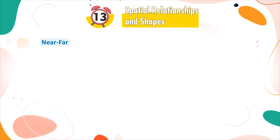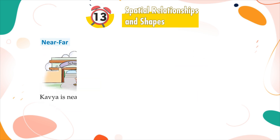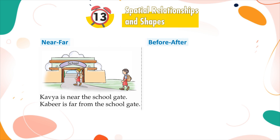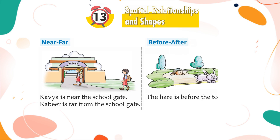Near, far: Kavya is near the school gate. Kabir is far from the school gate. Before, after: The hare is before the tortoise. The tortoise is after the hare.